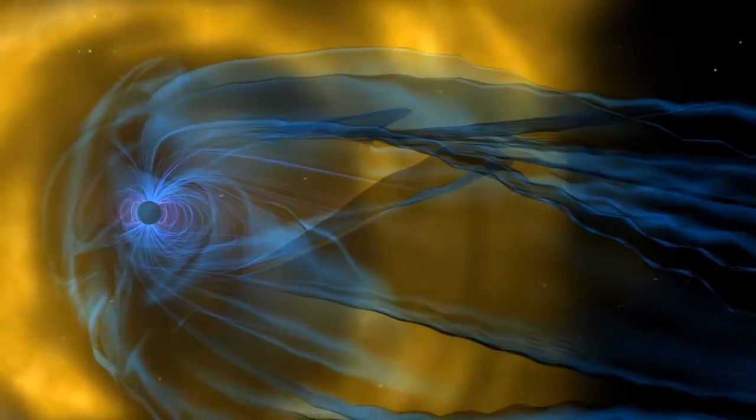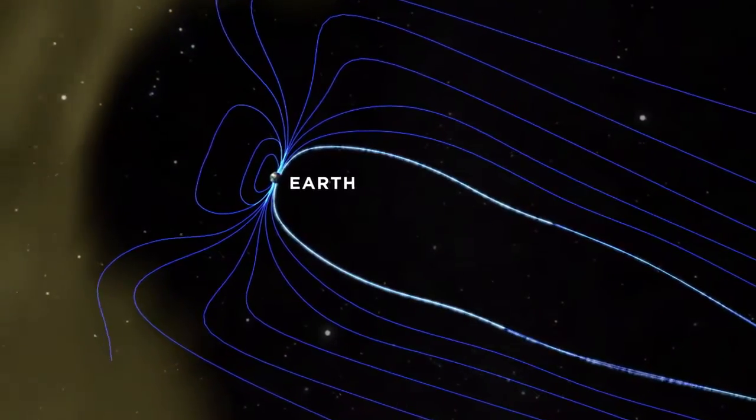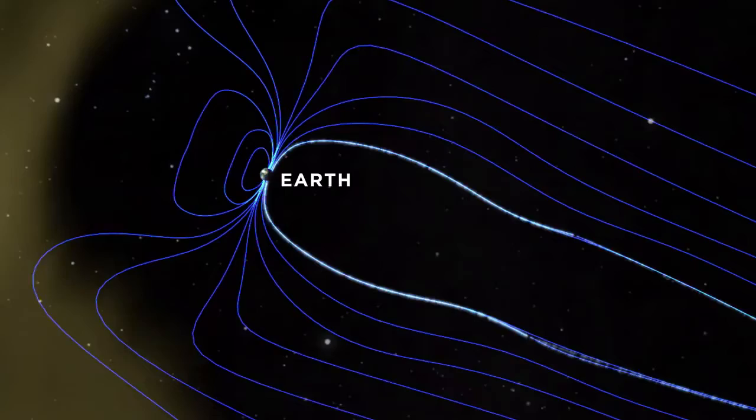Earth's magnetic field creates a protective bubble that shields us from highly energetic particles that stream in both from the Sun and into solar space. As the solar wind bathes our planet, Earth's magnetic field lines absorb this energy and get stretched.